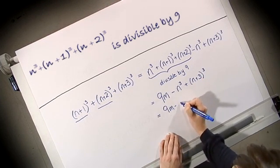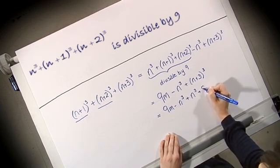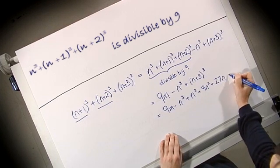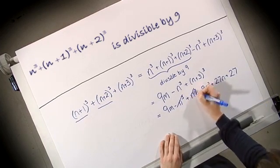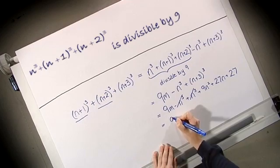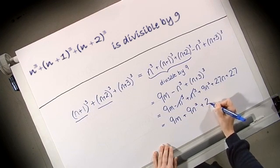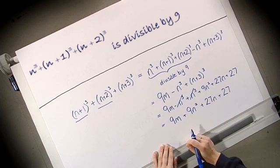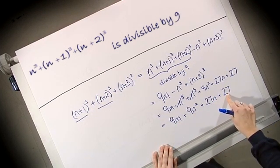So I get n cubed plus (n+3) cubed, which is n cubed plus 9n squared plus 27n plus 27. Notice that the n cubes cancel out. I'm now left with 9m plus 9n squared plus 27n and finally plus 27.